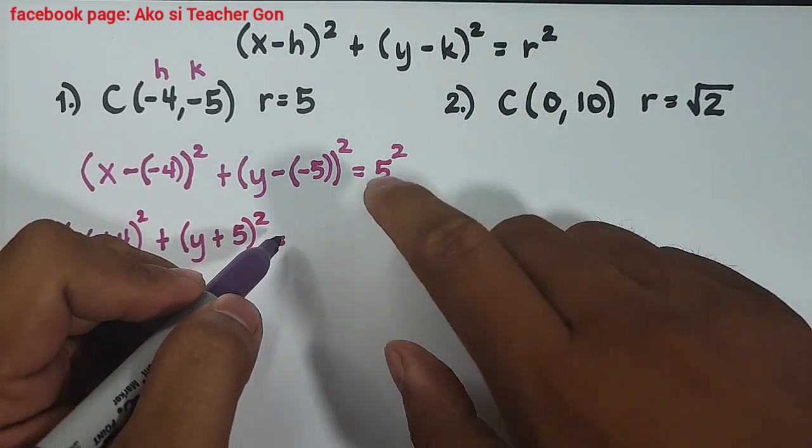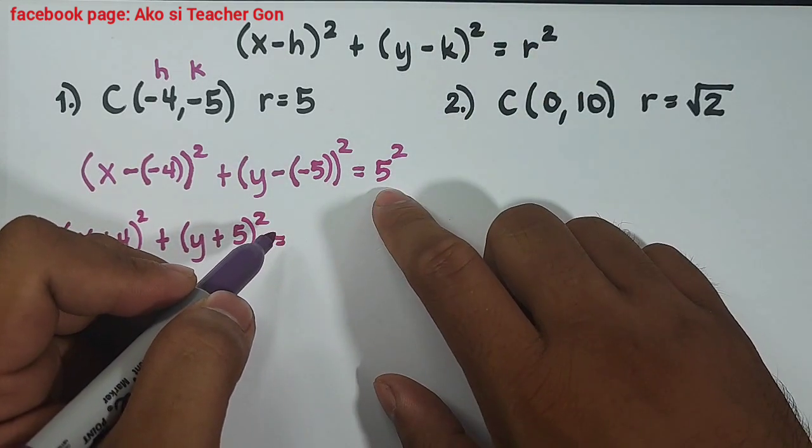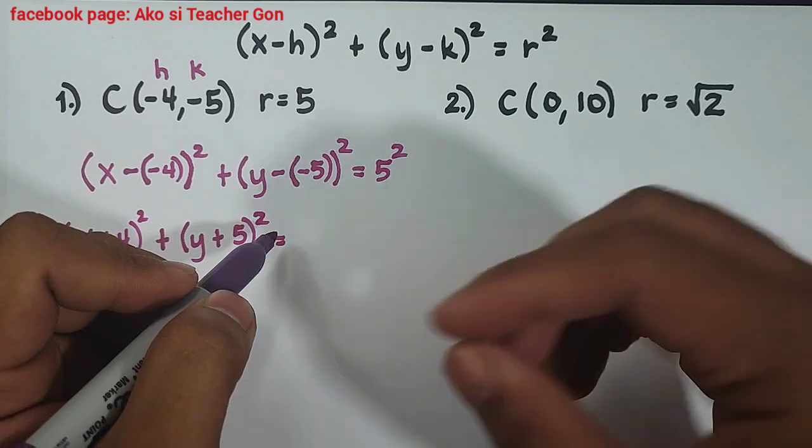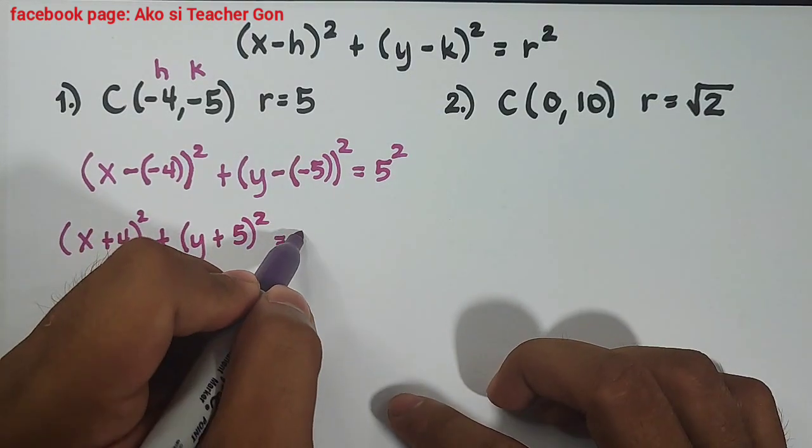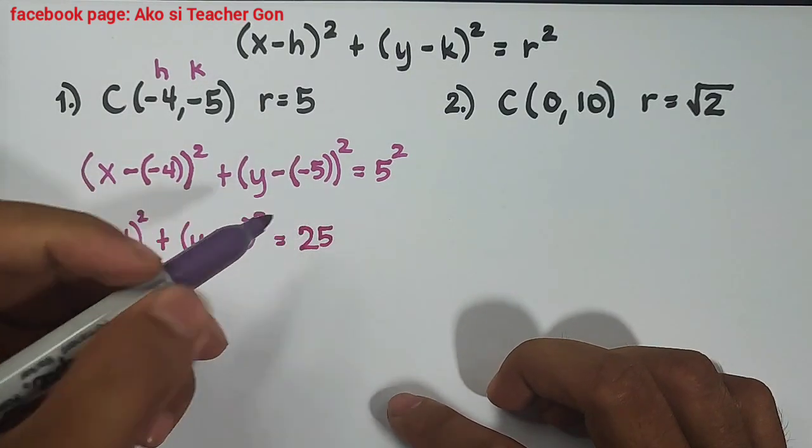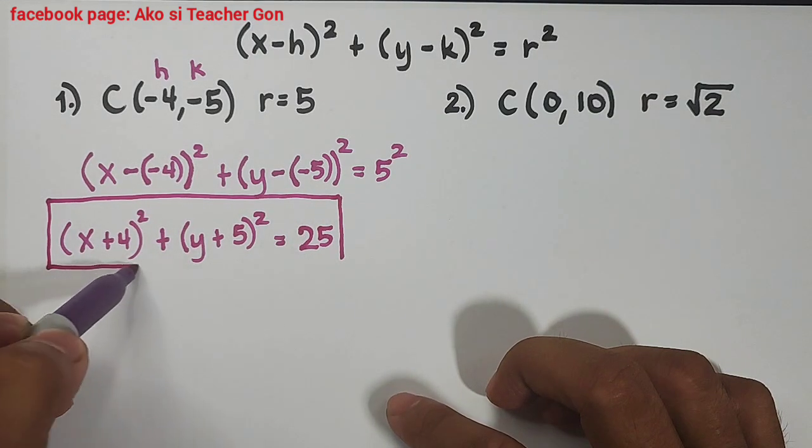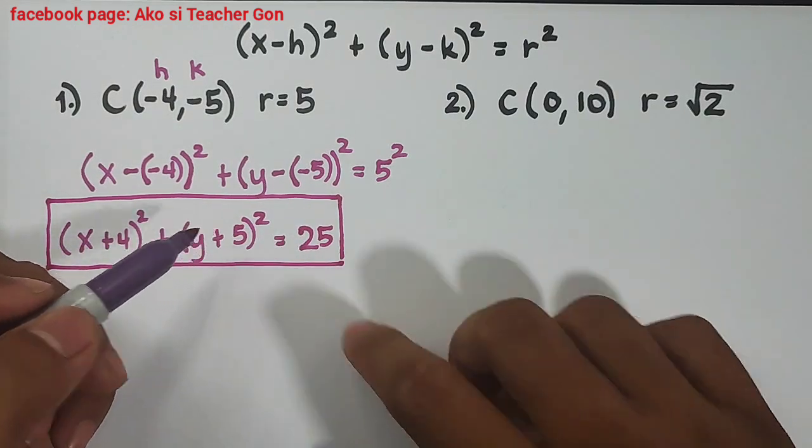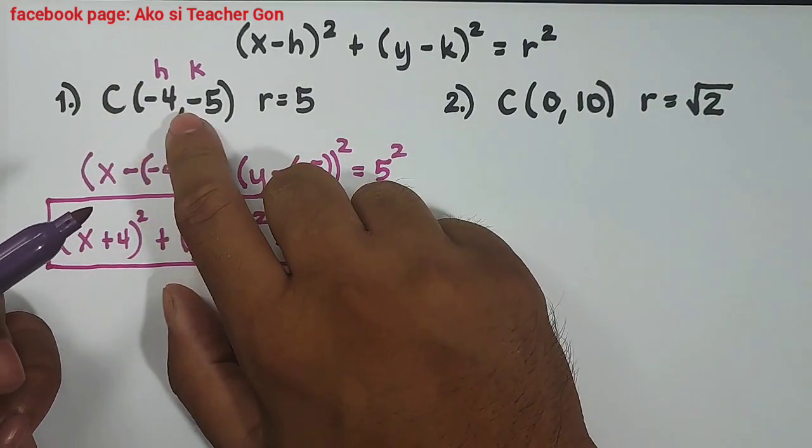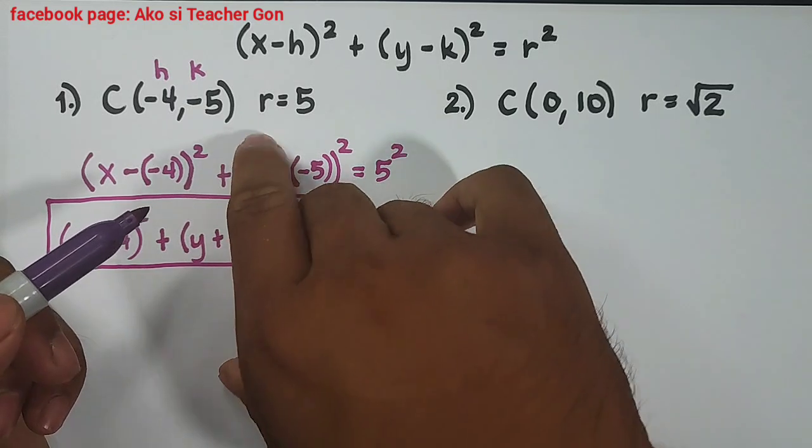If we expand 5 square that is simply 5 times 5, therefore that is 25. And this is now the standard form of the circle if the center is at (-4, -5) and the radius is equal to 5.